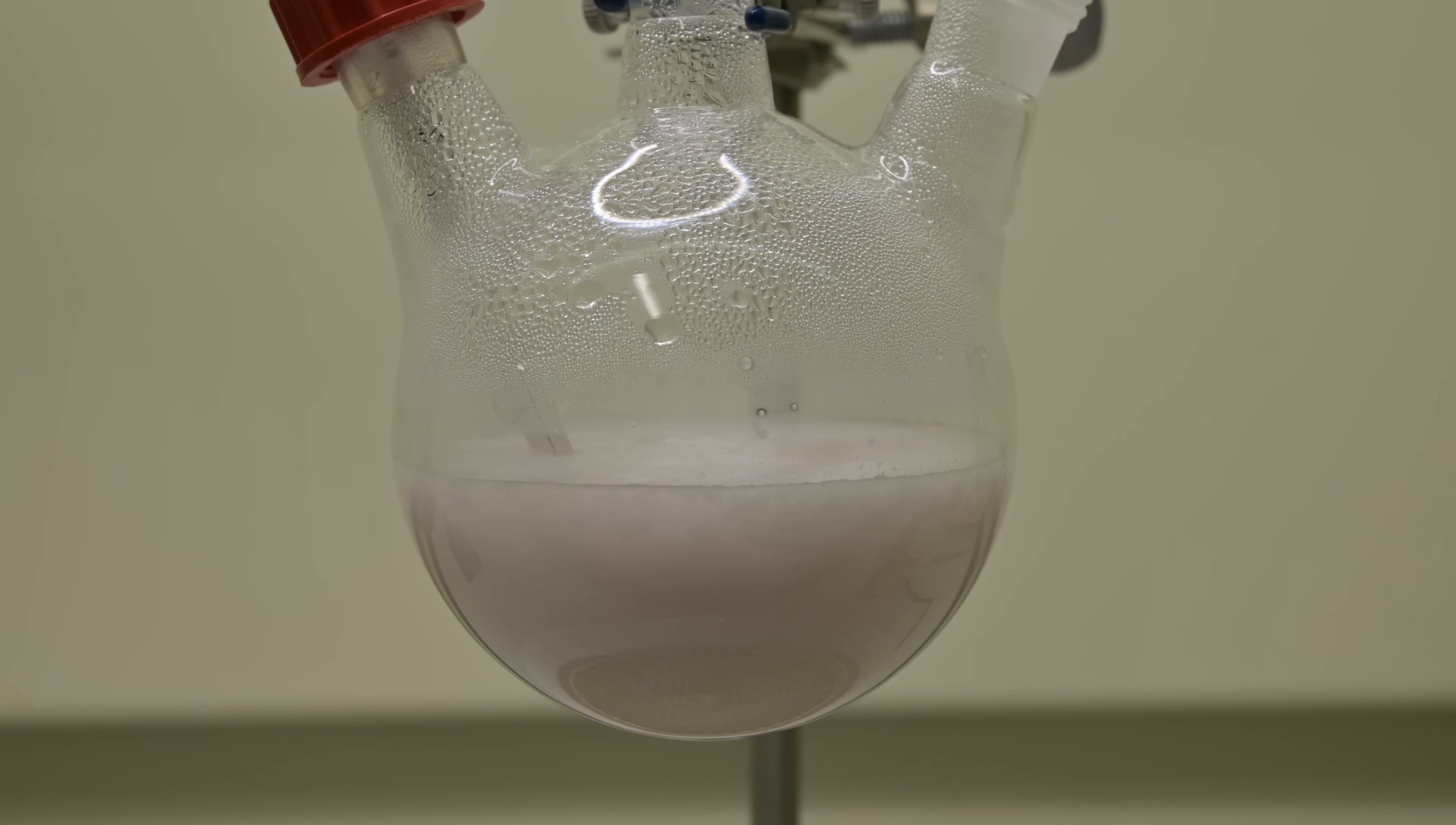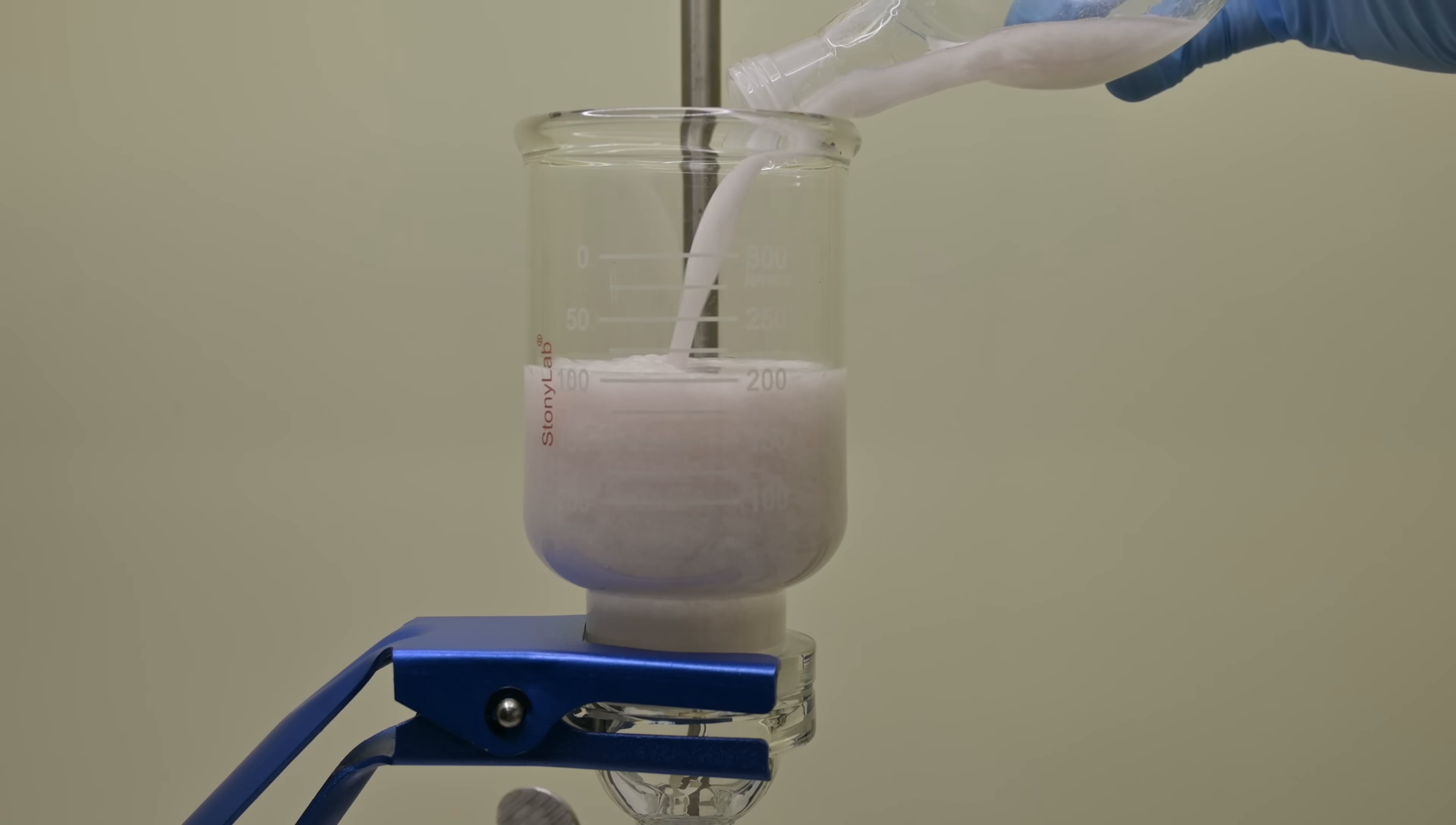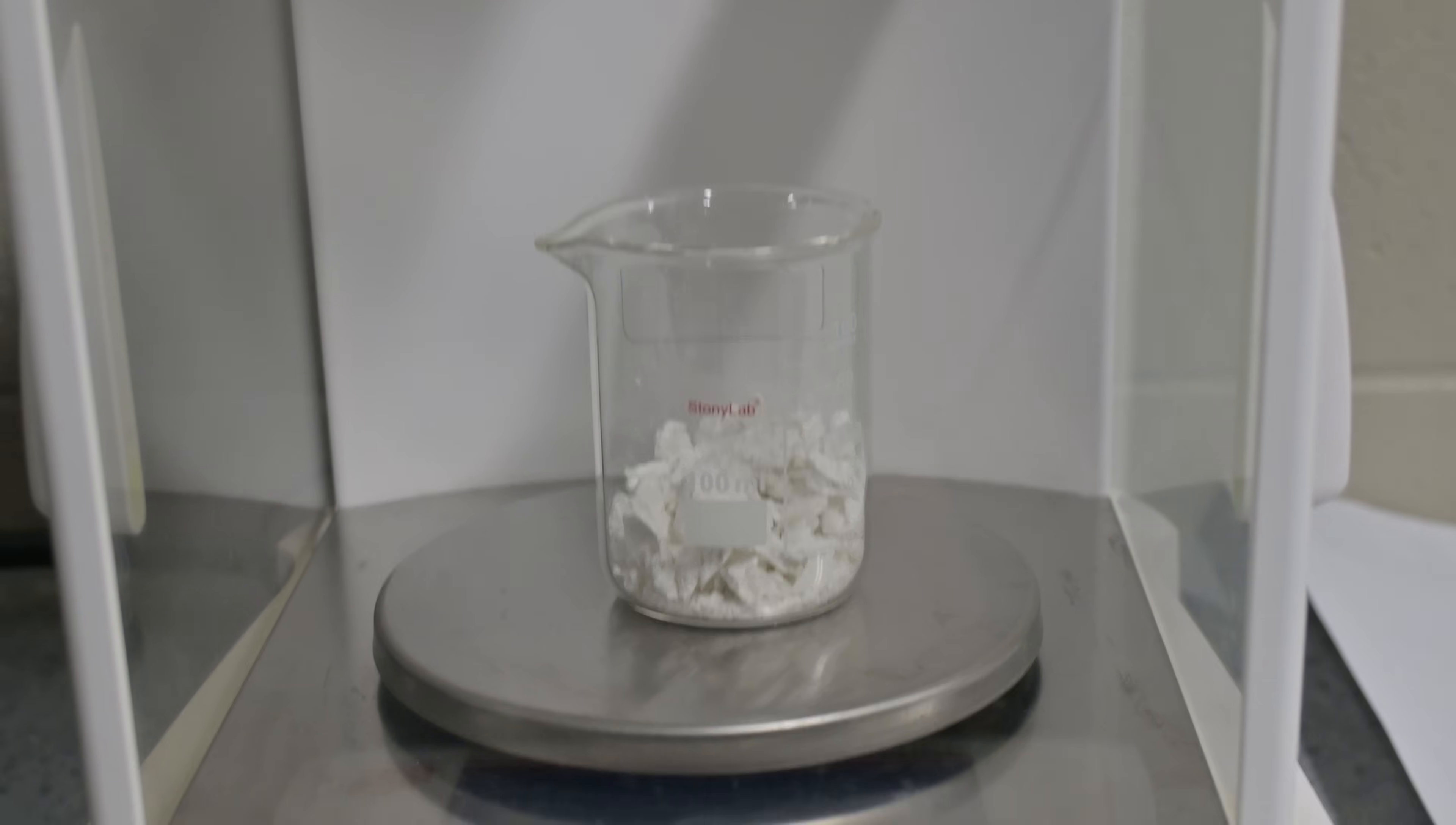To make sure all our product is out of solution, I place the flask into an ice bath. The colder temperature reduces solubility and helps our product, p-acetotoluidide, crystallize out of solution. Once the crystals have fully formed, I collect them using vacuum filtration. I rinse them with cold water to remove any residual sodium acetate or acetic acid that might be clinging to the crystals. Then I place the filter cake onto a watch glass and dry it overnight. My final yield is about 6.1 grams.